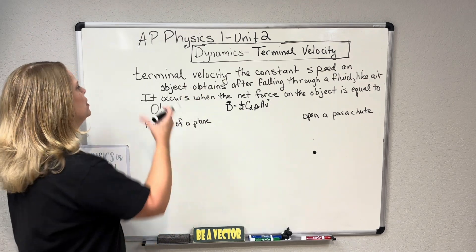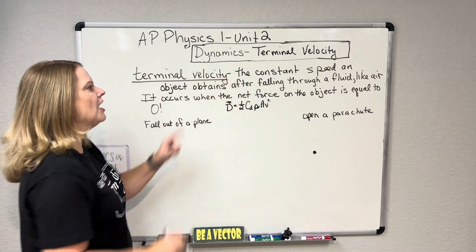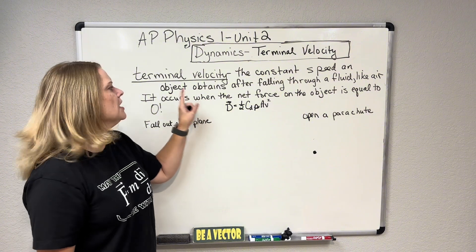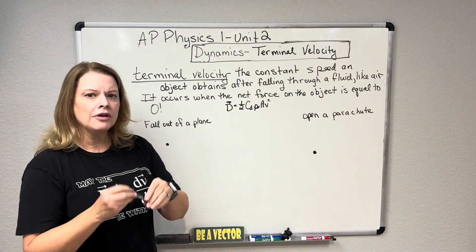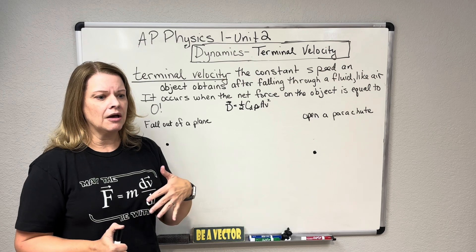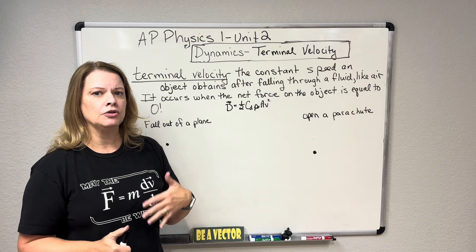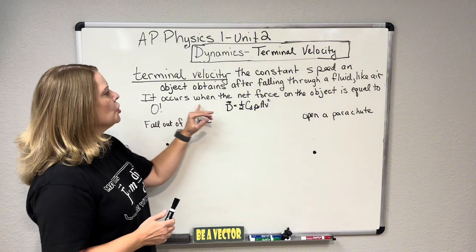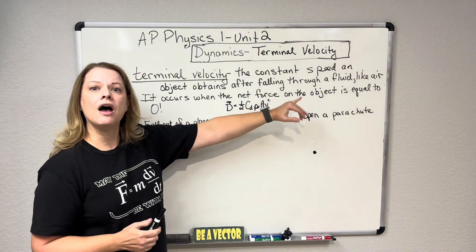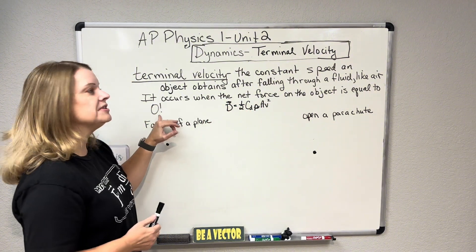What is terminal velocity? Terminal velocity is the constant speed an object obtains after falling through a fluid like air. You can also see this in water. You might have a terminal velocity concept question in water. But it occurs when the net force on the object is equal to zero.